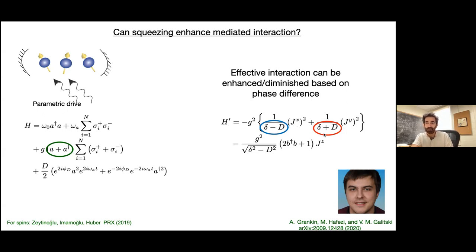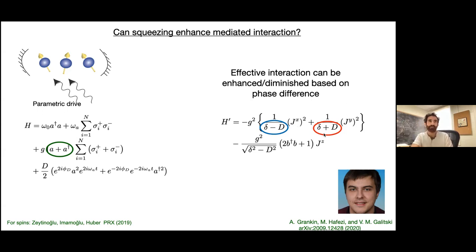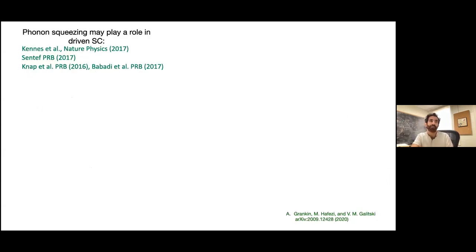There is experimental and theoretical work suggesting phonon squeezing may play a role in certain superconductors. The question Hafezi's group asks: can we inject squeezing by hand? Option 1: use optomechanics to transfer photon squeezing into phonon squeezing — put the superconductor in a cavity with a parametric drive to squeeze the cavity mode, which via optomechanical coupling translates into phonon squeezing and enhances superconductivity.